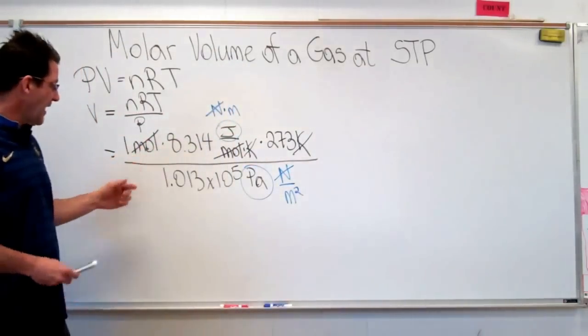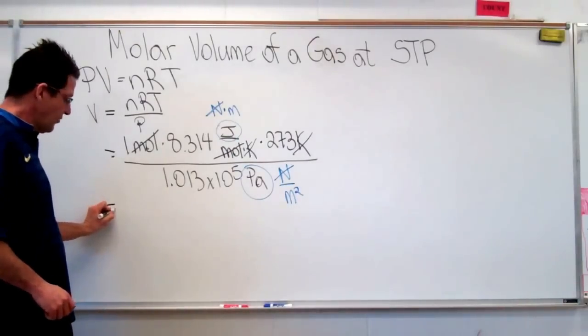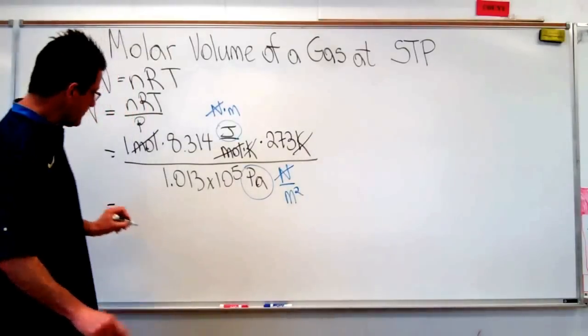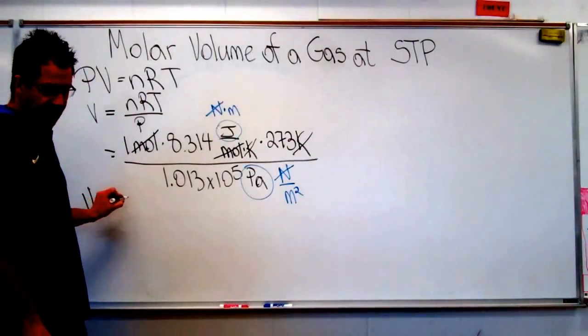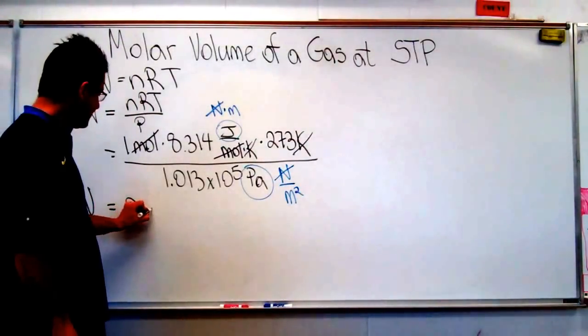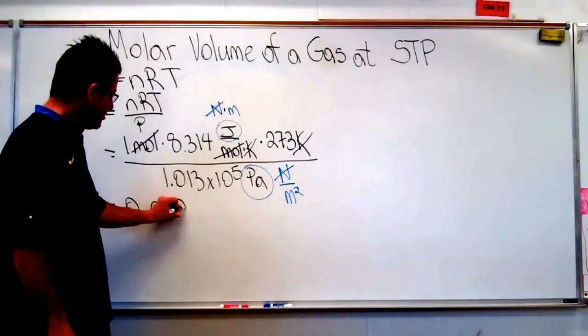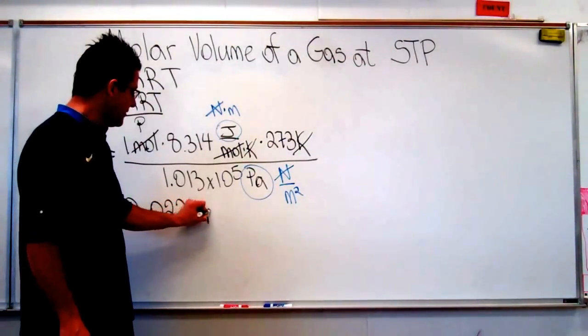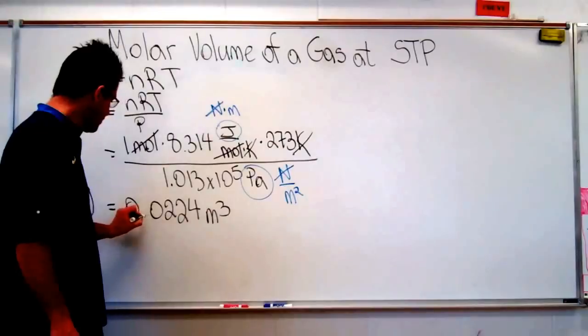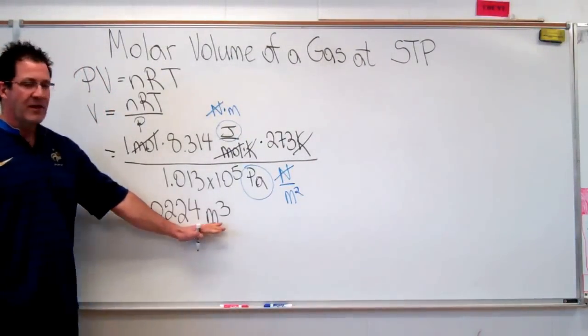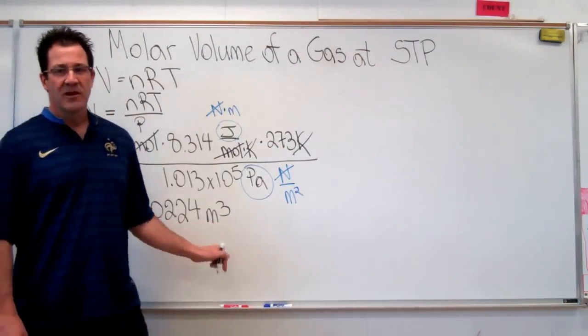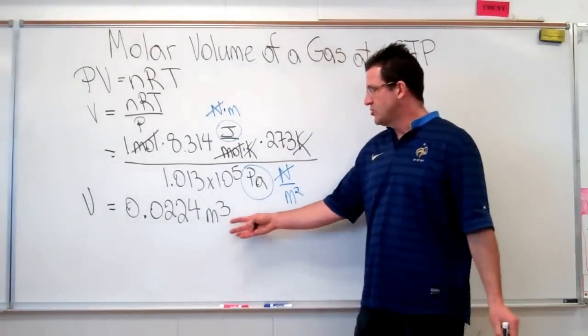So if we do all this on our calculator, we end up with a volume that is equivalent to 0.0224 meters cubed. Okay? So now we have our volume in meters cubed. And we need to get our volume to liters.